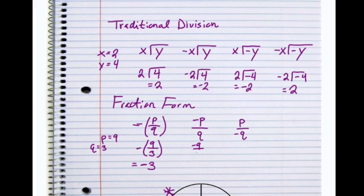Negative 9 over 3 is negative 3, right? Because there's a negative. A negative number divided by a positive number is negative.